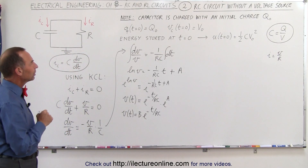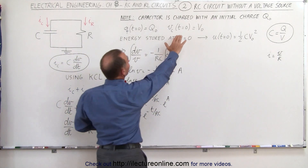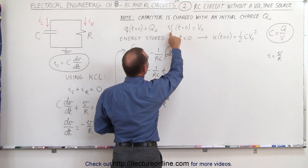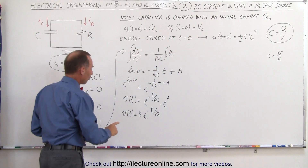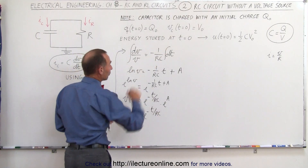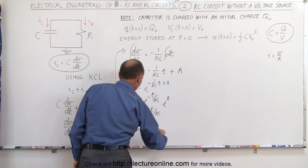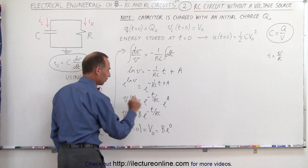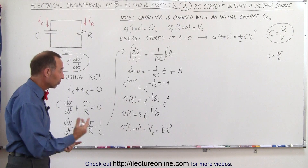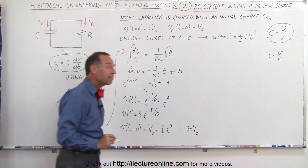To find what B equals, we go back to the initial condition. When time equals zero, the voltage across the capacitor must equal V sub nought. Plugging time equals zero into our equation, e to the zero equals one, so V sub nought equals B times one, and therefore B equals V sub nought — the initial voltage at time equals zero.